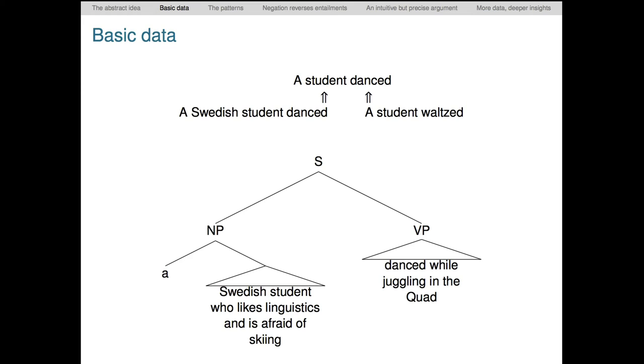Here I've made them very complex. The whole sentence is a Swedish student who likes linguistics and is afraid of skiing danced while juggling in the quad. The restriction student is modified by the attributive adjective Swedish and the relative clause who likes linguistics and is afraid of skiing. And the scope is danced with the modifier while juggling in the quad. Quantificational determiners like a are in control of both these argument slots semantically. To see this though, we need to look at more data.